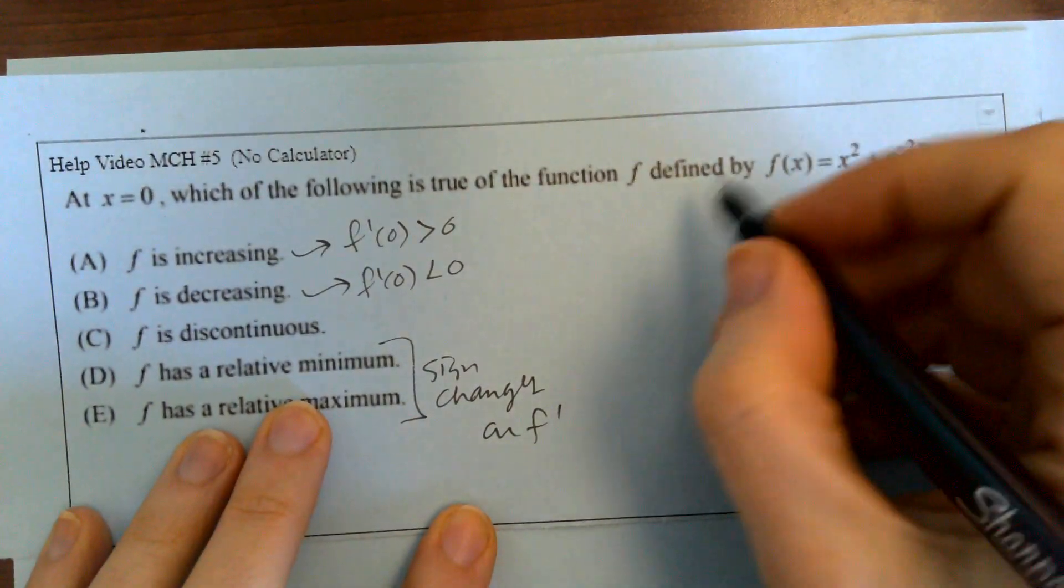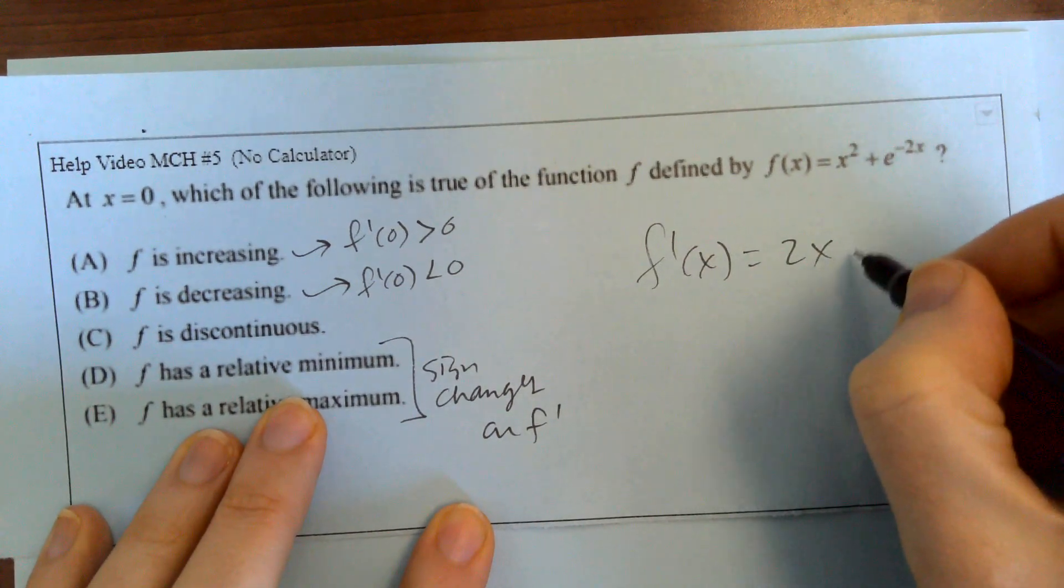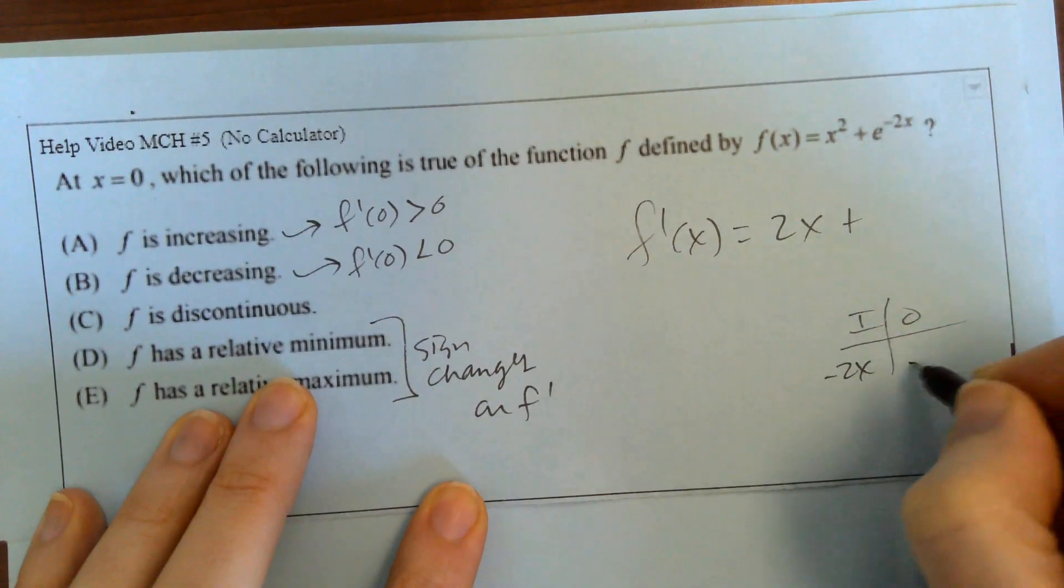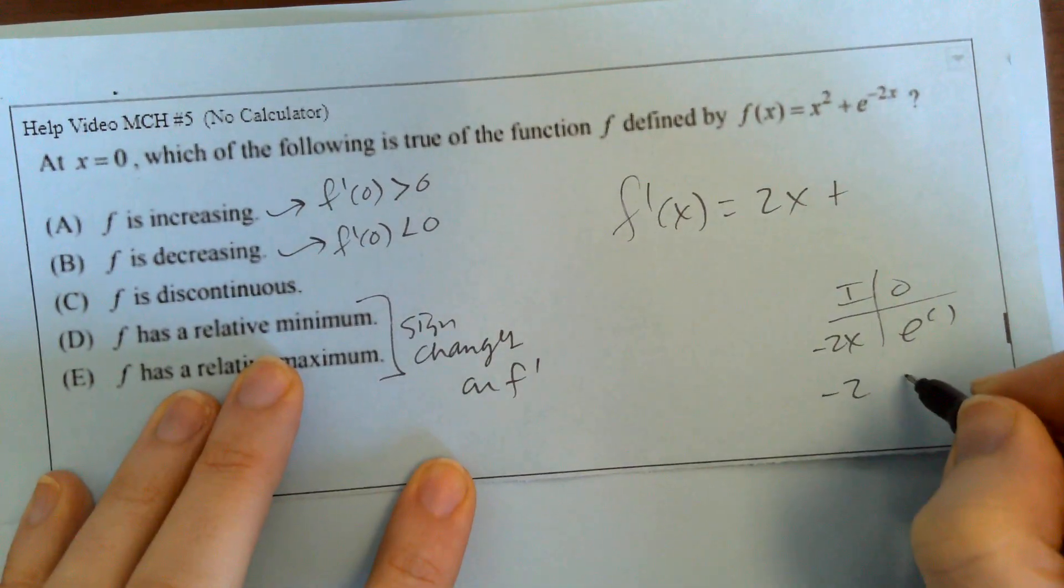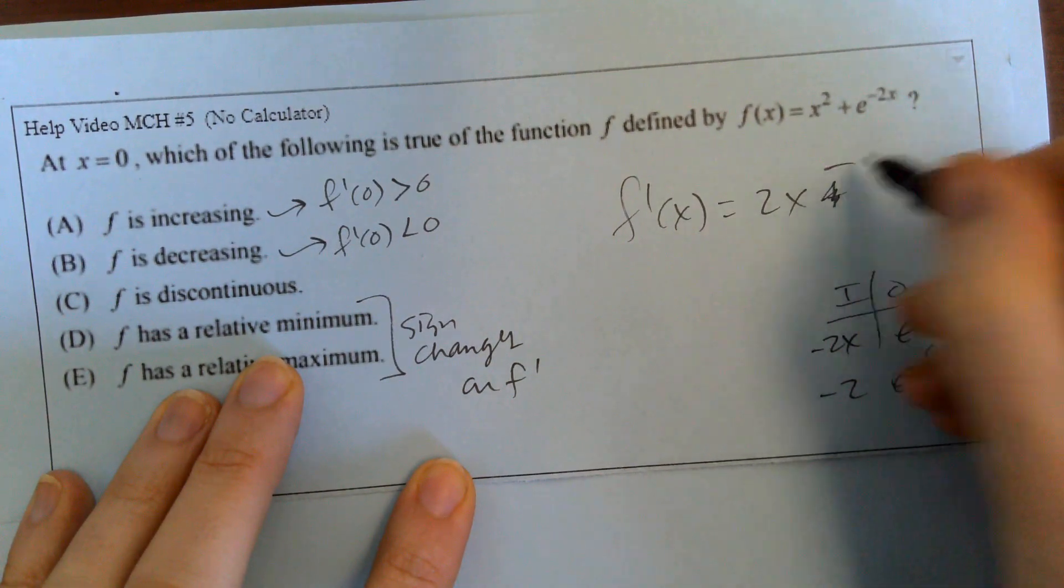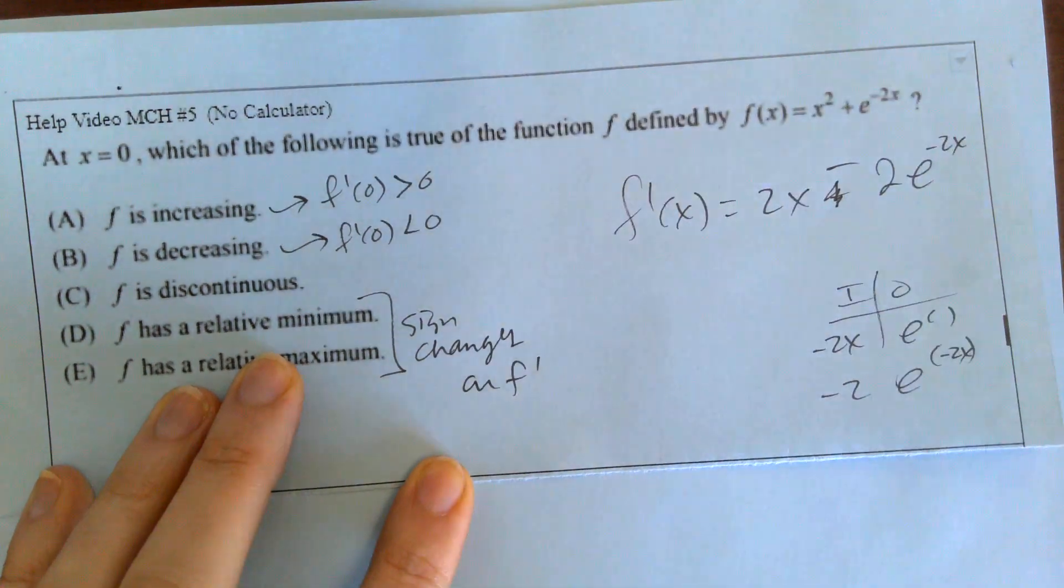All right, so let me take the derivative. So f prime of x is 2x plus, you need the chain rule here, negative 2x e to the blank, negative 2 e to the blank, negative 2x goes back in. So this would be actually minus 2 e to the negative 2x.